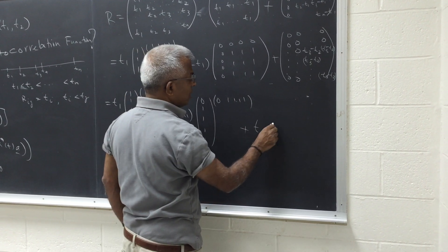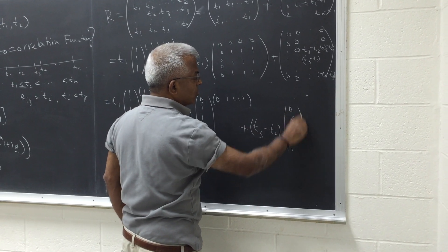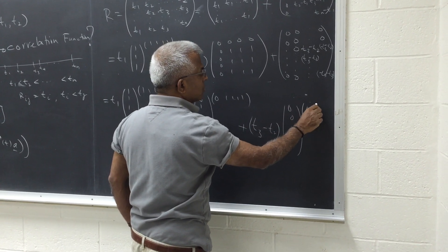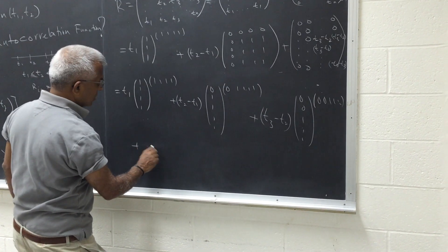the next one is going to be t3 minus t2. Then this will be zero, zero, one, one, one, one, multiplied by zero, zero, one, one, one. Plus, etc.